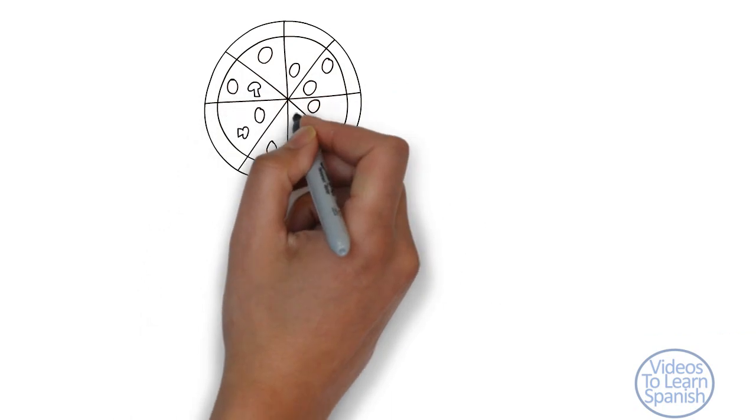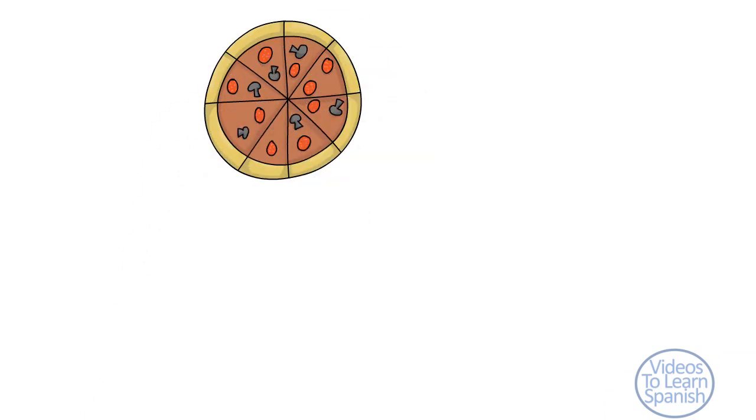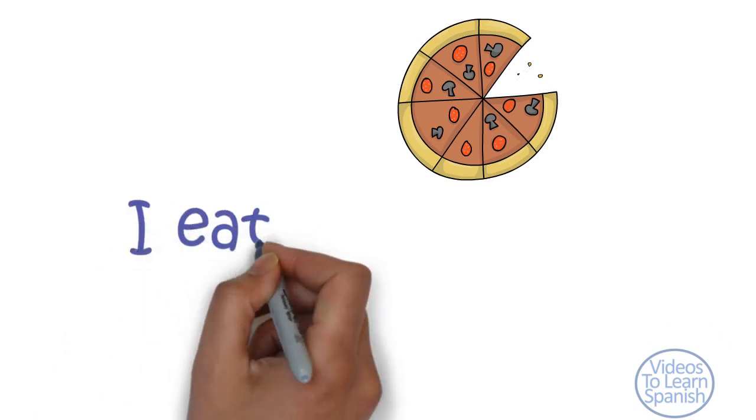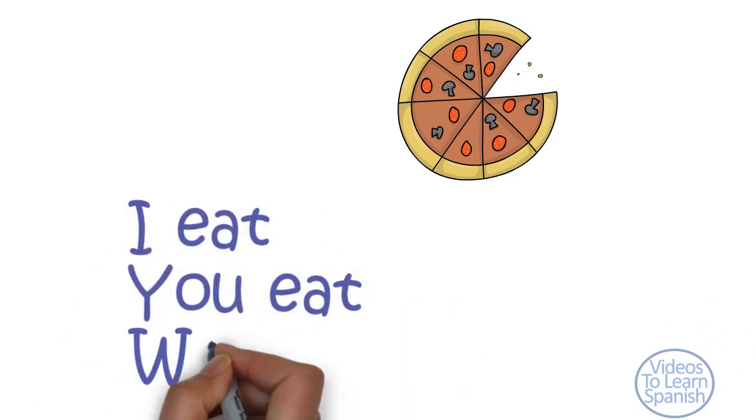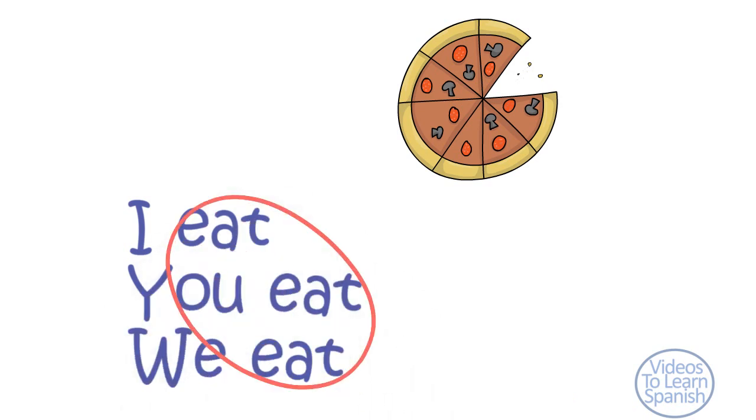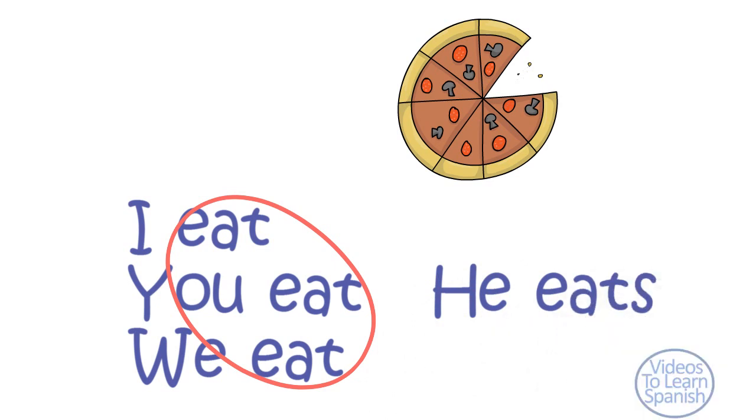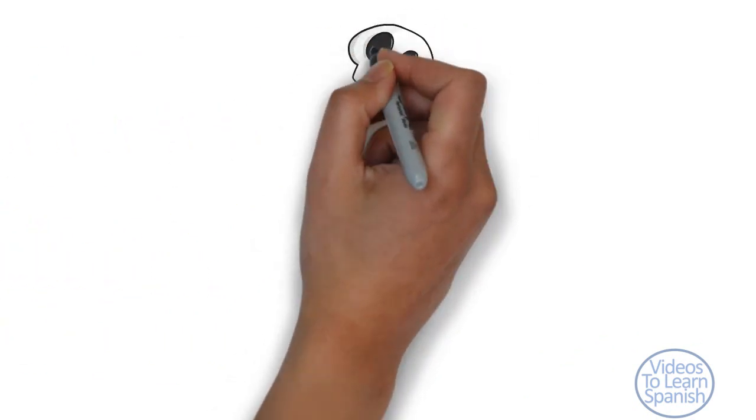In English, the form of most verbs does not depend on the person we are referring to. I eat, you eat, we eat, except for the third person, he eats. However, the verb to be has a different form for each person. Let's see how we conjugate its equivalent, ser, in Spanish.